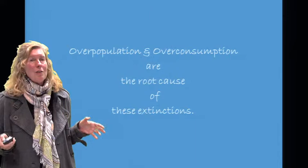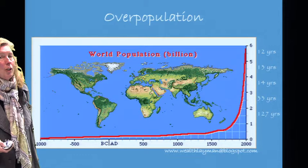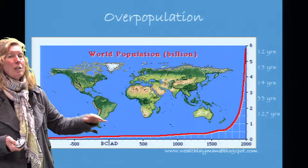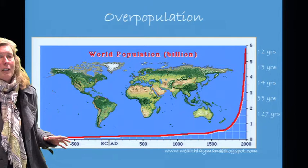Overpopulation and overconsumption are the root cause of these extinctions. Basically, there are too many of us consuming too much. Looking at this graph of human population growth over time, we see what we call a J-curve, which indicates exponential growth. Whenever you see a J-curve, what you are measuring is happening very rapidly.